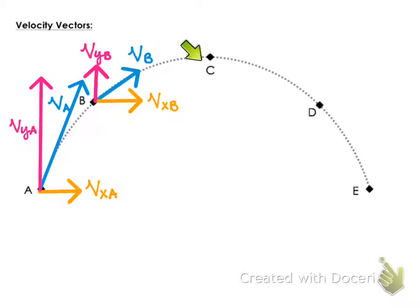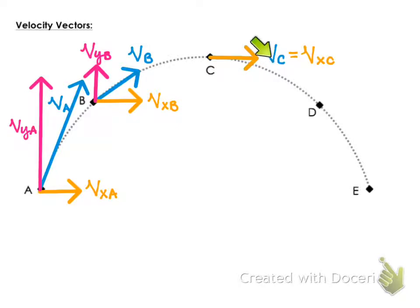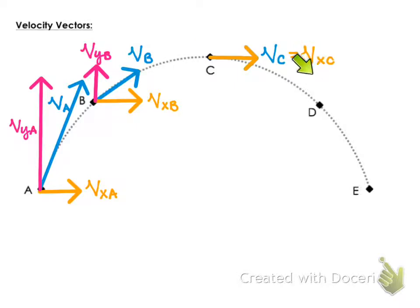The projectile moves along and reaches point C, where it's just moving straight horizontally for that instant in time — which means your total velocity at the highest point of the path is only horizontal velocity. It is the horizontal velocity.